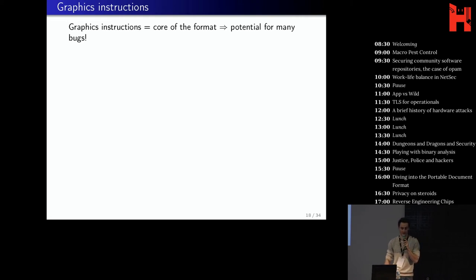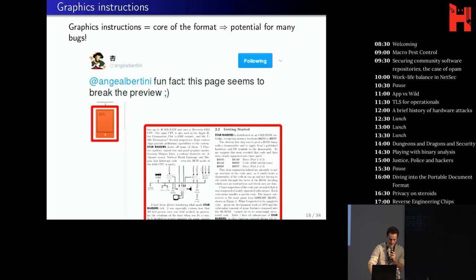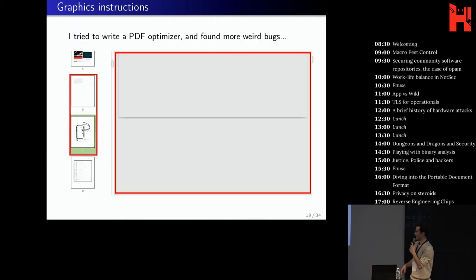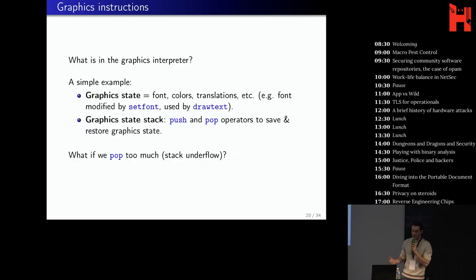Then there's the graphic instructions. So as you may know, this is the core of the format because it allows to display contents. And it's quite complex as well, so there is a potential for many bugs. And there was quite recently this tweet on Twitter. So here you can see there is a normal page. And here in the preview, only the first paragraph here is shown and then the rest is not displayed. So I thought, well, this bug looks quite annoying because why would it break? And then I started to play with this PDF file.